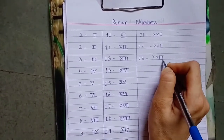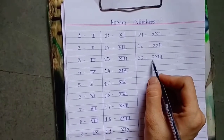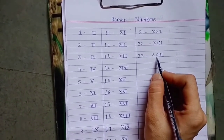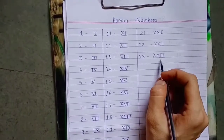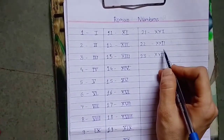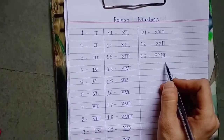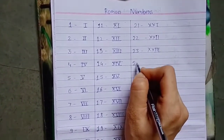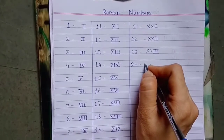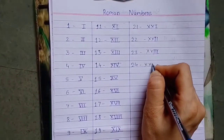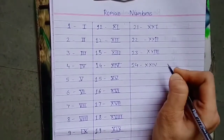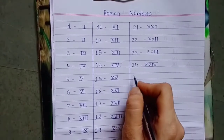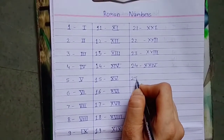इसको simple method से हमें याद रखना है — जैसे 10 के लिए हमने X यूज़ किया था, 20 के लिए हम double X यूज़ कर रहे हैं। और 1, 2 कैसे लिखना है: 1 के लिए I, 2 के लिए double I, और 3 के लिए triple I — इस तरह याद रखोगे तो बहुत easily याद हो जाएगा। 24 — 20 and then 4. आप चाहें तो ऐसे line नीचे खींचे, चाहें तो ना खींचे तो भी चलेगा। 25.